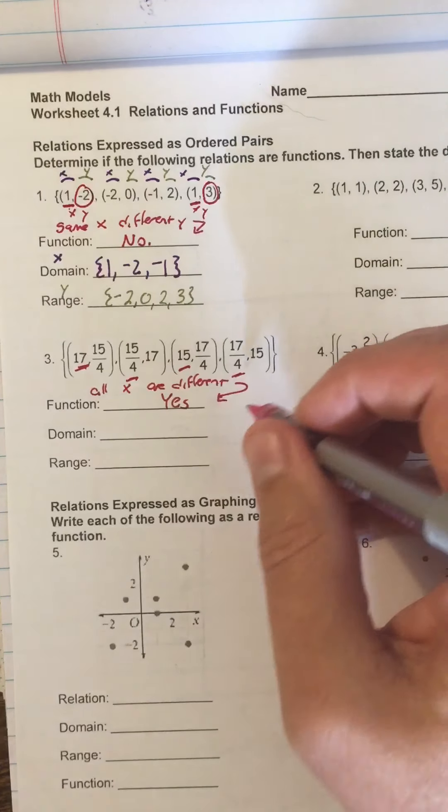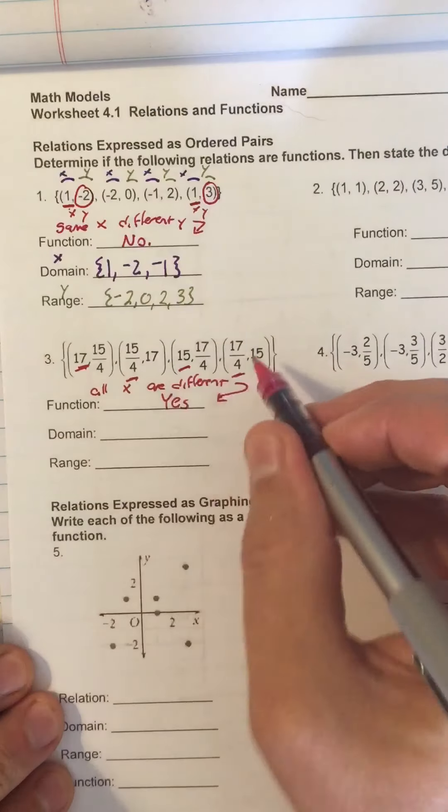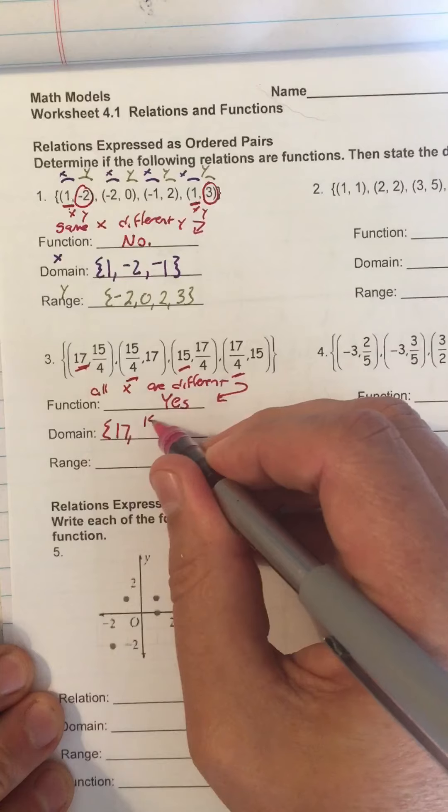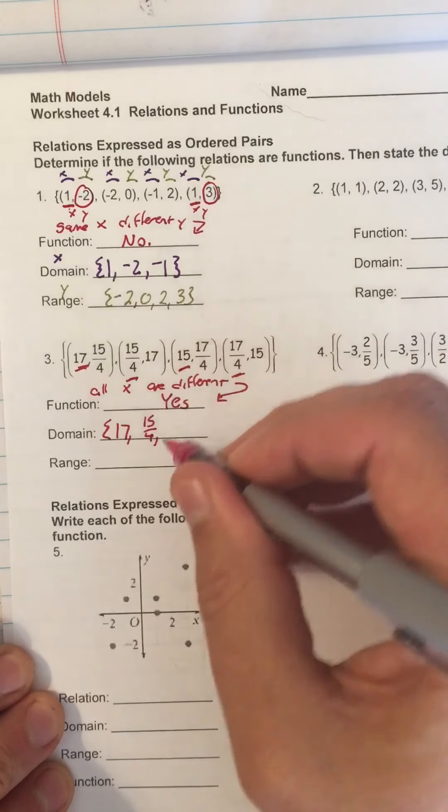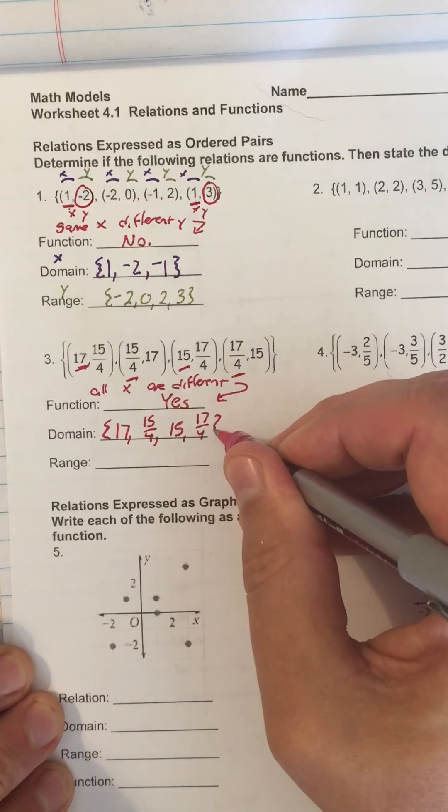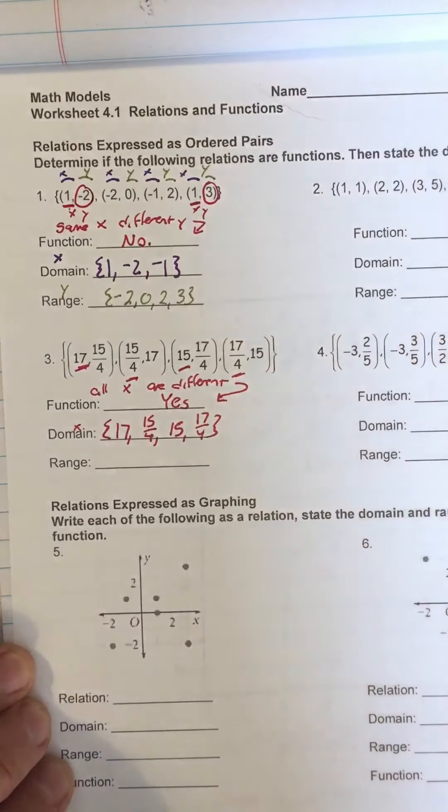Alright, what is the domain? It's all these x numbers. So those are 17, 15 fourths, 15, and 17 fourths. That's the domain, because it's all the x's.